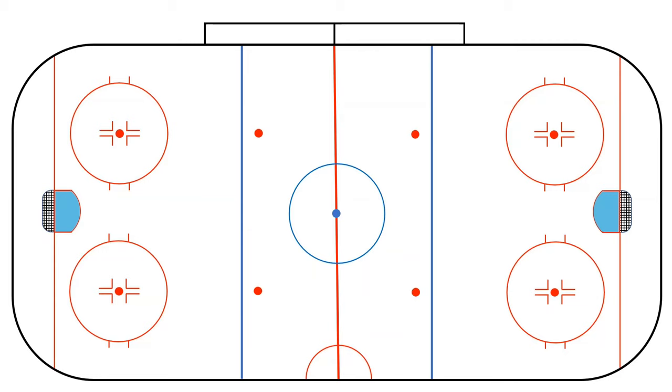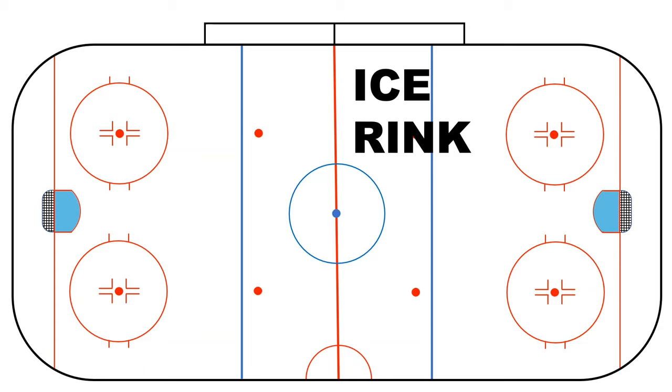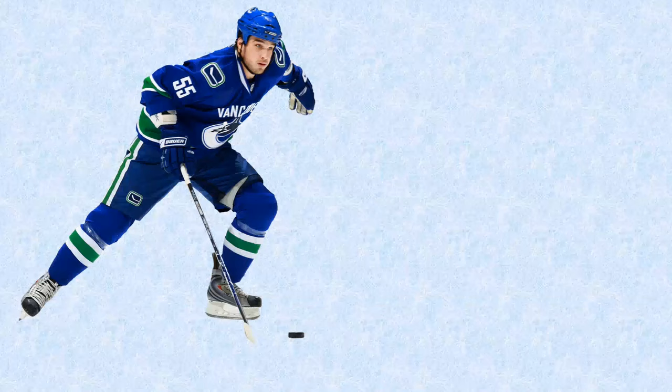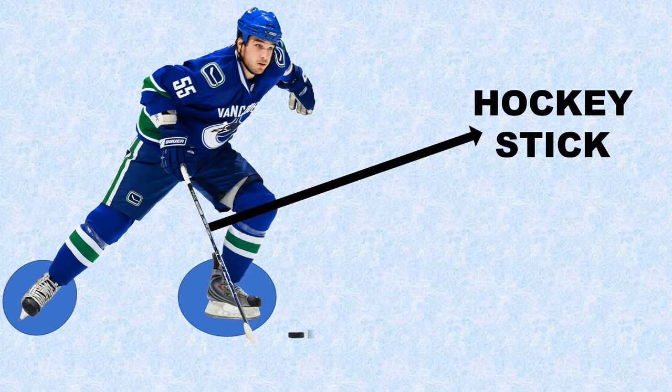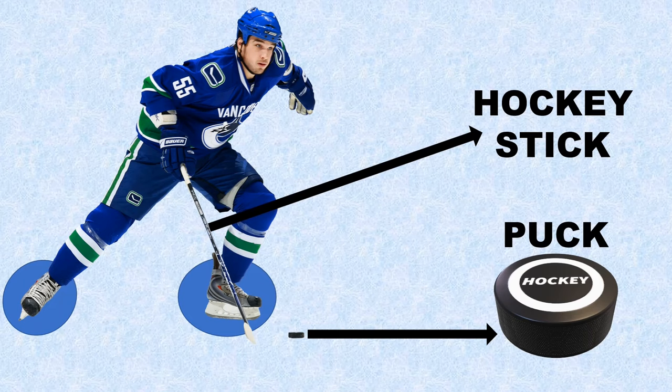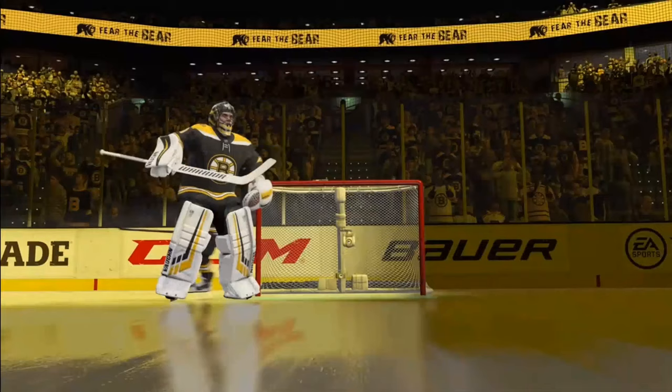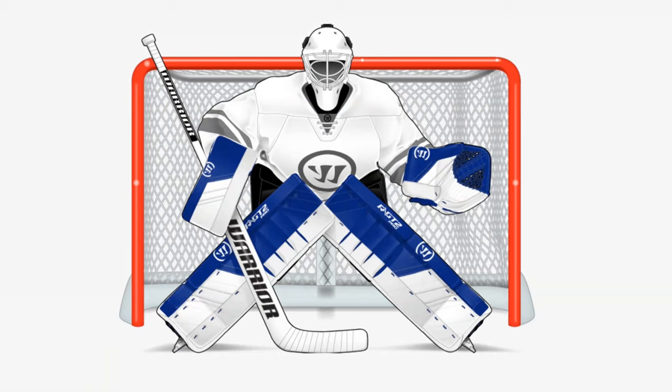Ice hockey is played on an ice surface known as an ice rink. The length of the rink is 200 feet and the width is 85 feet. Since players play on ice they use ice skates, they use a hockey stick, and they hit the puck into the goal. The puck is a solid rubber disc rather than a spherical ball. The objective is to hit the puck into the goal, and there is a goalkeeper whose job is to protect it.